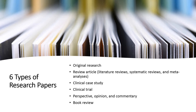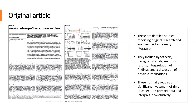If you have a target journal in mind, you should check whether it publishes the kind of manuscript you are planning to write. Some of the possible types of scientific publications are: Original Research, Review Article, Clinical Case Study, Clinical Trial, Perspective, Opinion, and Commentary, and Book Review. Original articles are papers that detail studies reporting original research and are classified as primary literature. They include hypothesis, background study, methods, results, interpretation of findings, and a discussion of possible implications. These normally require a significant investment of time to collect the primary data and interpret it conclusively.